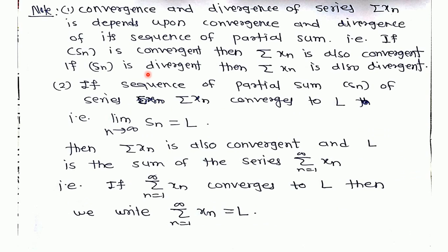In summary, convergence and divergence of a series depends on the convergence and divergence of its sequence of partial sums. If the sequence of partial sums is convergent, the series is convergent; if it is divergent, the series is divergent. If the sequence of partial sums sn converges to limit L, then we write the limit as n tends to infinity of sn equals L, and the series xn is convergent with sum equal to L — that is, summation from n=1 to infinity of xn equals L.